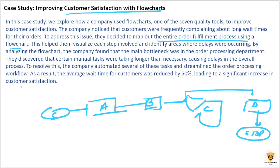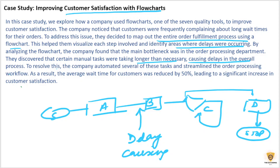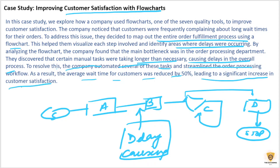The company had to identify where the delays were coming from. They discovered that certain manual tasks were taking longer than necessary, causing delays in the overall process. For example, the company automated several of these tasks and streamlined the order processing workflow. As a result, the average wait time for customers was reduced by 50%, leading to a significant increase in customer satisfaction.